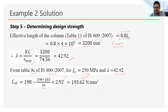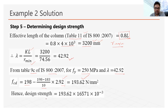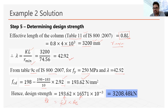Now with FCD = 193.62 N/mm² and the gross area AE = 16,571 mm², the design compressive strength is PD = FCD × AE = 193.62 × 16,571 = 3,208.48 kN. This is the design strength of the compound built-up section, completing the solution of Example 2. Thank you.